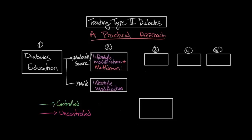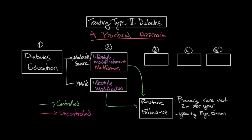After being started on these interventions, the individual should be rechecked by their primary care provider in one to two months. If their hemoglobin A1c has improved and their diabetes is under control, then they can move on to routine follow-up, which consists of a primary care visit at least two times per year, as well as a yearly dilated eye exam by an ophthalmologist.